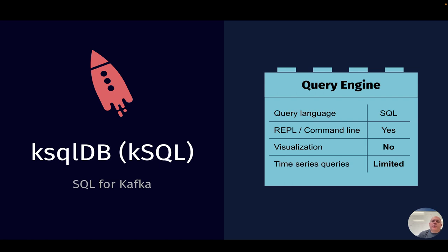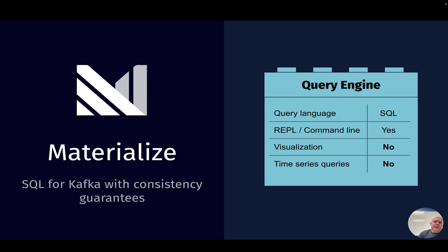The first query engine we'll talk about is ksqlDB — this is just SQL for Kafka. The query language is SQL. There's a command line where you can interactively work with data, but it doesn't provide visualization and the time series queries are very limited, basically to things like windows of data. Another query engine is Materialize — SQL for Kafka with consistency guarantees. Again, the query language is SQL, there's an interactive command line, but no visualization and no time series queries.